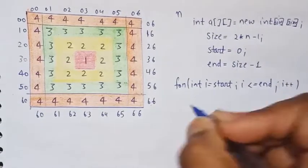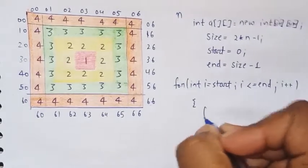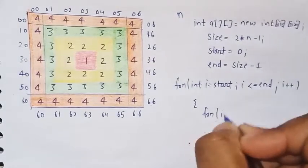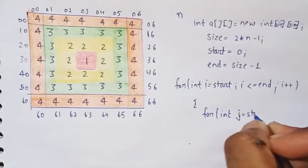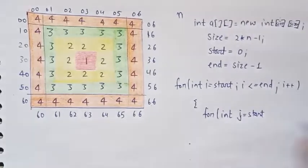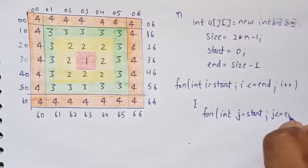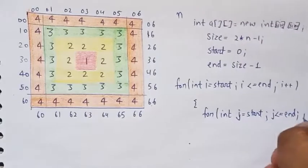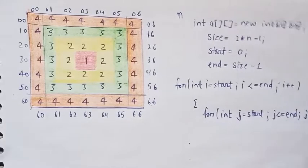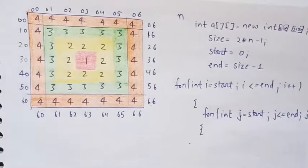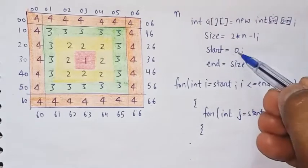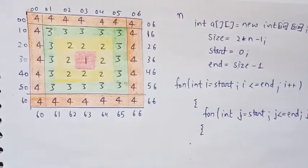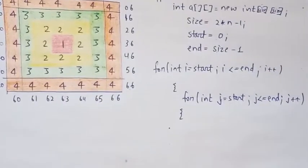Now the outer loop and inner loop. j equals start, semicolon, j less than or equal to end, and j plus plus. Here we will do what we have to do — start is 0, end is 6 — so automatically this will work through here. Now we will see how to do this pattern.